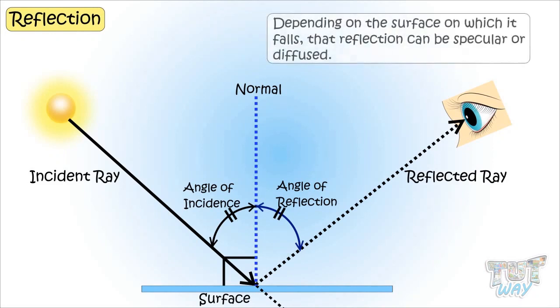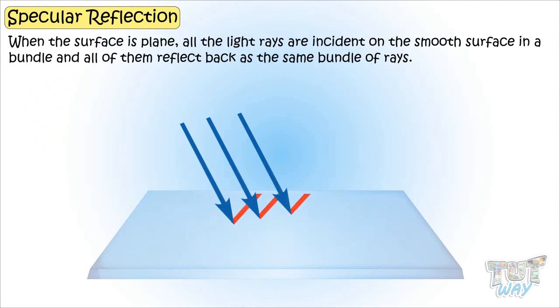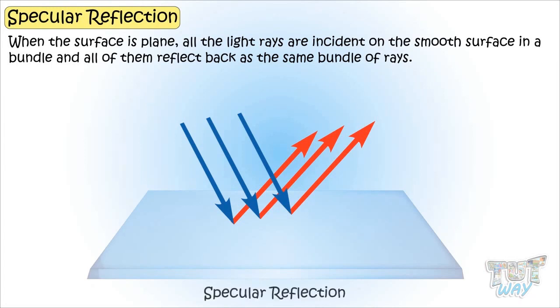But, depending on the surface on which it falls, the reflection can be specular or diffuse. When the surface is plain, all the light rays are incident on the smooth surface in a bundle, and all of them reflect back as the same bundle of rays. Such reflection off smooth surfaces is called specular reflection.